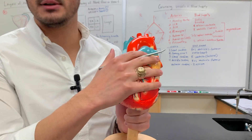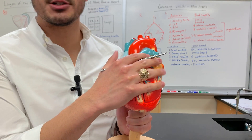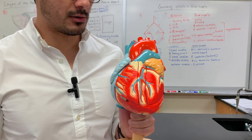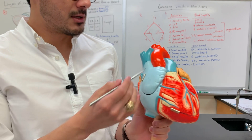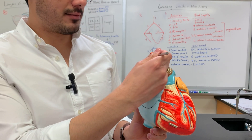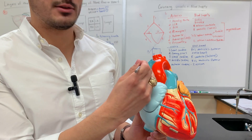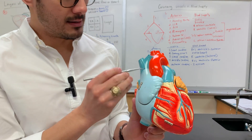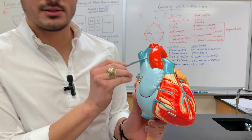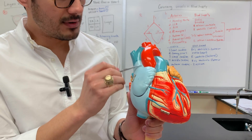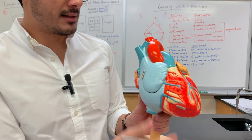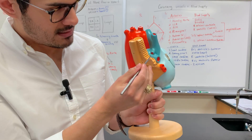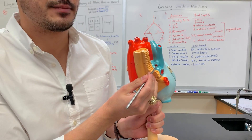In this video we're going to go over the different structures found on the heart model. At the top you have the left and the right brachiocephalic vein. This is the superior vena cava, and then on the back side this is the azygous vein.